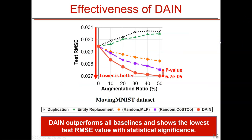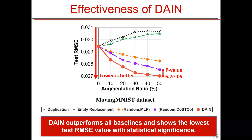The results show our data augmentation performance on the Moving MNIST dataset. Across five different methods including our proposed DANE, our method shows the lowest test RMSE for all data augmentation ratios. This means DANE outperforms all baseline data augmentation methods in terms of test RMSE with statistical significance, demonstrating the effectiveness of our data augmentation framework.